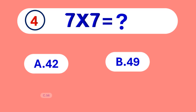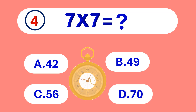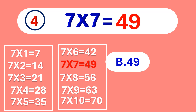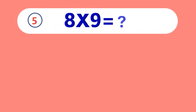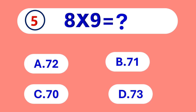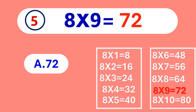7 times 7 is equal to... 49. 7 times 7 is 49. 8 times 9 is equal to... 72. 8 times 9 is 72.